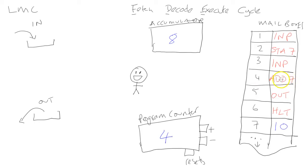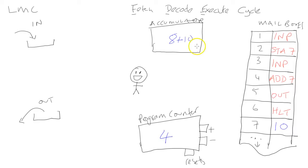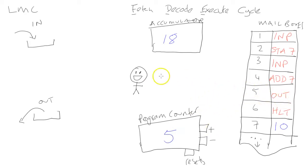He goes over to position four and fetches the instruction which says ADD — add whatever number is in the accumulator to whatever number is in position seven. He decodes and executes that instruction: he goes to position seven, gets that 10, and adds it to the eight — 8 plus 10 gives a total of 18.